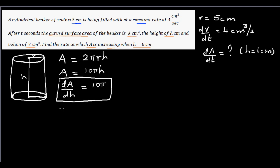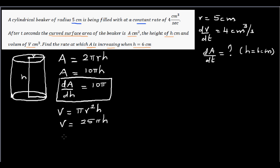Now we need volume. The formula is V = πr²h. Putting r as 5, the volume is 25πh. So volume as a function of height is V = 25πh, and the rate of change of volume with respect to height is dV/dH = 25π, which is also constant.